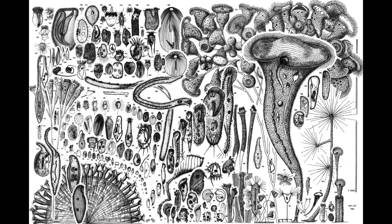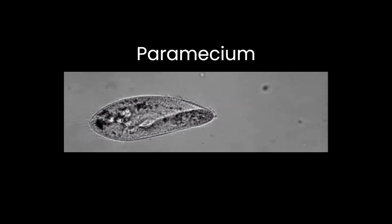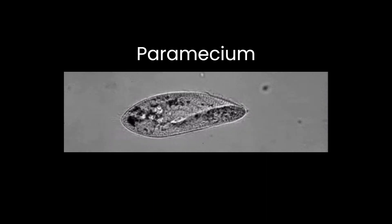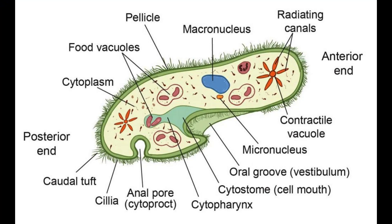The ciliophora includes some of the most recognizable protozoans. Among these are the paramecium, one of the two protozoan genera you've likely heard of, the other being amoeba. They are often used as a general model of protozoan anatomy. Paramecium is generally oblong with a distinct oral groove, sometimes called a food groove, which is lined with cilia and allows food particles to pass into the cytostome, a type of single-celled mouth.